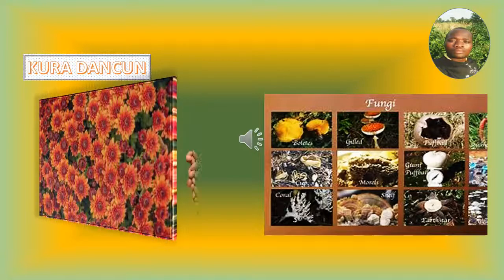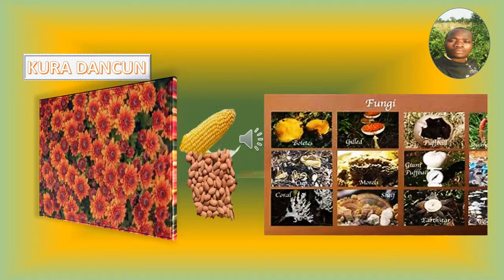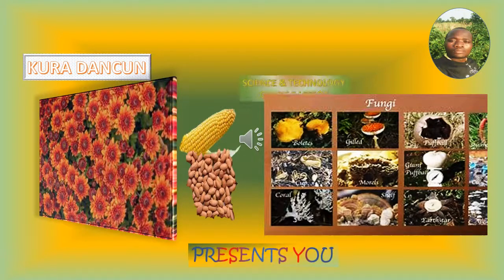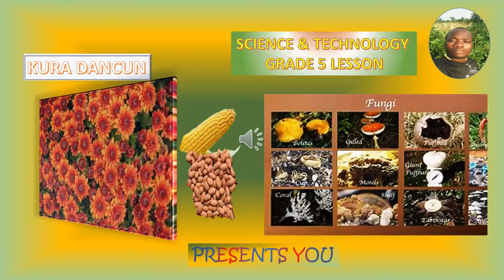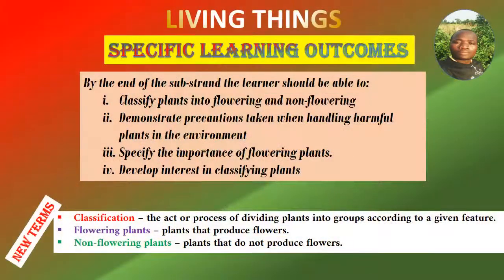Kuradan Khan presents a science and technology Grade 5 lesson on living things. These are the specific learning outcomes. By the end of the substrand, the learner should be able to: